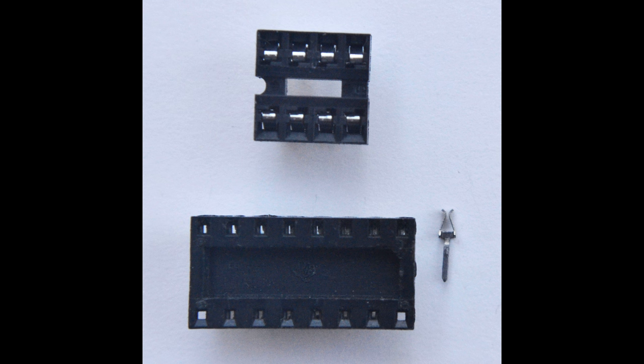A good socket is shown above a TI socket with a contact removed. The TI sockets contact the edges of the IC pin, while the good sockets contact the sides of the pin.